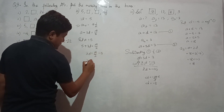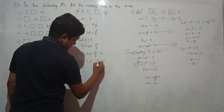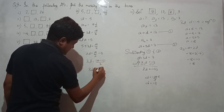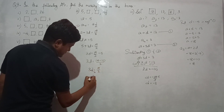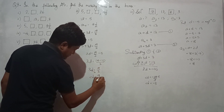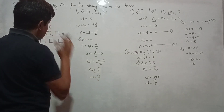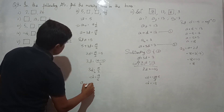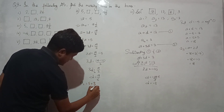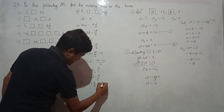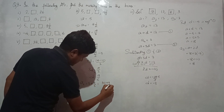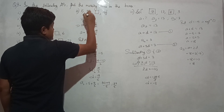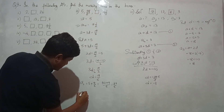3d equals 19 by 2 minus 5, which is 19 minus 10 by 2 equals 9 by 2. So d equals 9 by 6. The second term is a plus d equals 5 plus 9 by 6, which is 30 by 6 plus 9 by 6 equals 39 by 6.